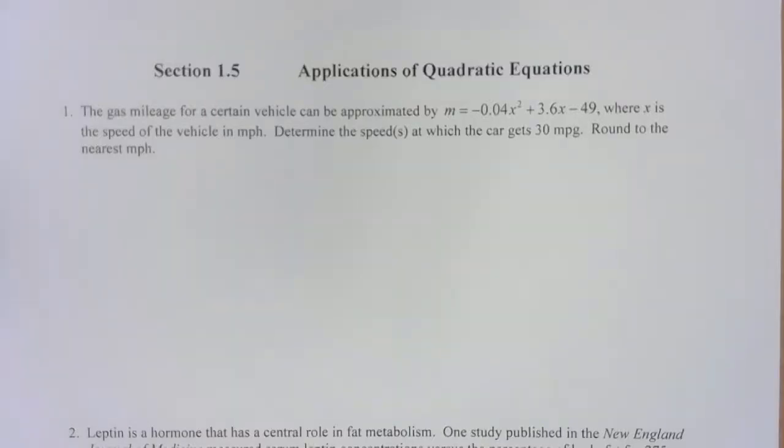Applications of quadratic equations. The gas mileage for a certain vehicle can be approximated by m equals negative 0.04 x squared plus 3.6 x minus 49, where x is the speed of the vehicle in miles per hour.